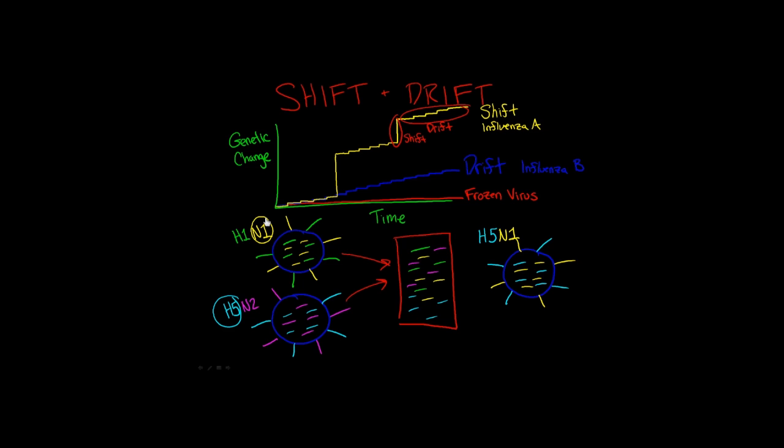Now this is a brand new influenza virus with new surface proteins that our immune system has never seen before. When antigenic shift occurs in a population, this is when we have huge pandemics, because the human population isn't able to defend appropriately against this new virus.